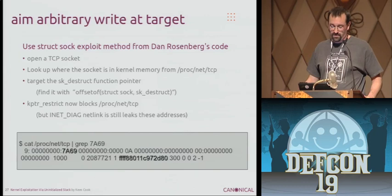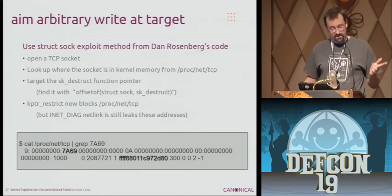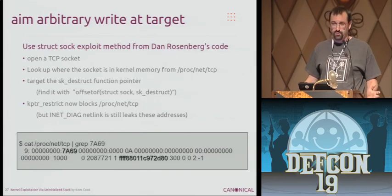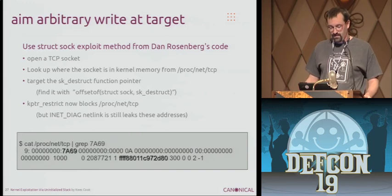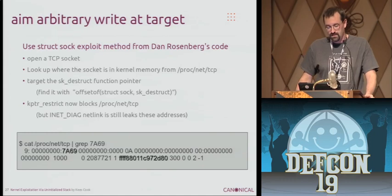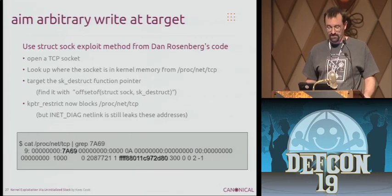I used the sock struct exploit from Dan Rosenberg's code recently. You basically open up a socket and it shows up in /proc/net/tcp. The first bold value is the port I'm listening on in hex, and the other bold value is the actual kernel location of the socket you need to target. So you just ask the kernel nicely for what you want to overwrite. In modern versions of the kernel, kptr_restrict now blocks /proc/net/tcp, but you can still get the same information out of a netlink interface that is still open — you just have to modify your code a little bit.